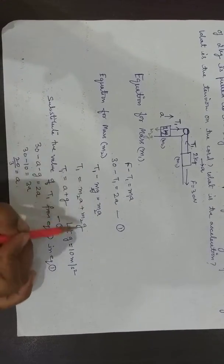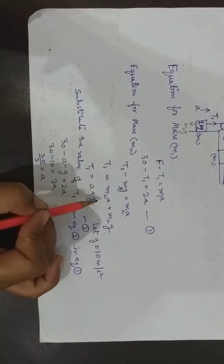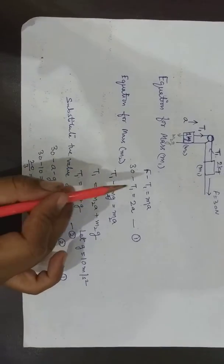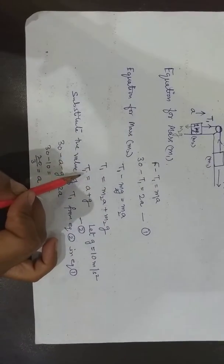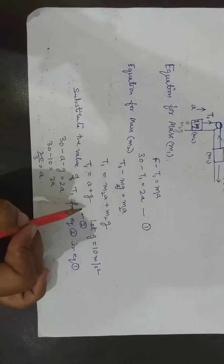I have rearranged the equation. Here I have substituted the value of M2, that is 1 kg, which is given in the question. Now T1 comes out to be A plus G. Let this be equation number 2.